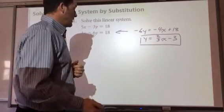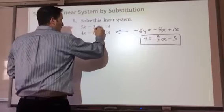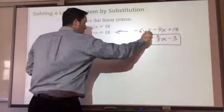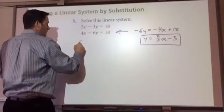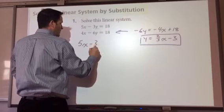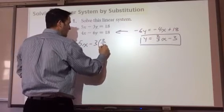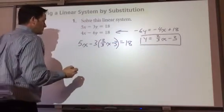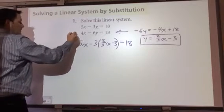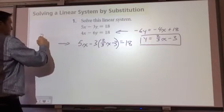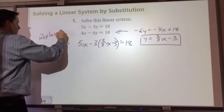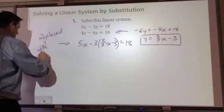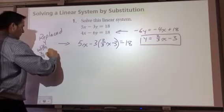It's equal to 2 over 3x minus 3. I'm going to replace y in the first equation with 2 over 3x minus 3. 5x minus 3 times 2 over 3x minus 3 equals 18. So, what I did to get this was replace y with its equivalent to 2 over 3x minus 3.